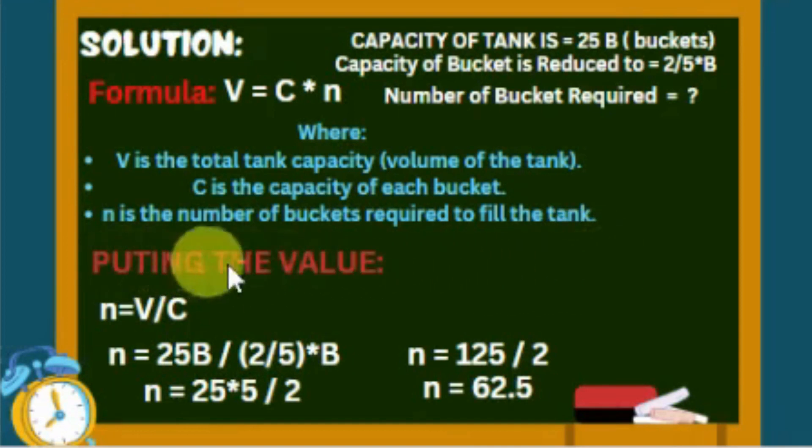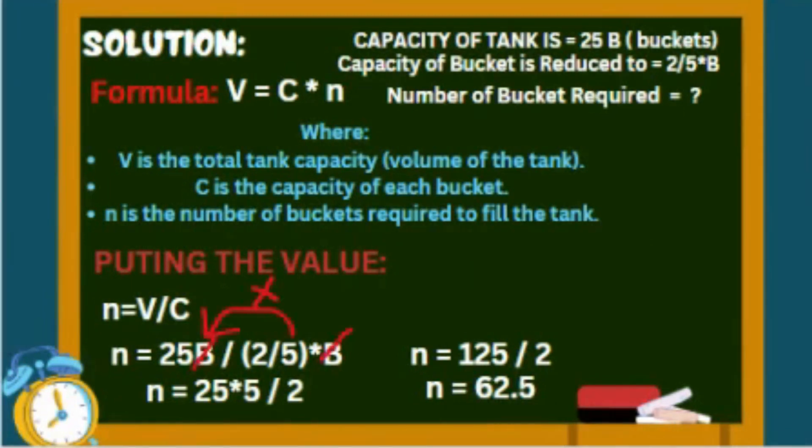Okay, now we are going to solve this equation like this: n equals V over C, n equals 25B over 2/5 times B. B cancels with B, and 5 multiplied with 25 becomes 125 over 2.